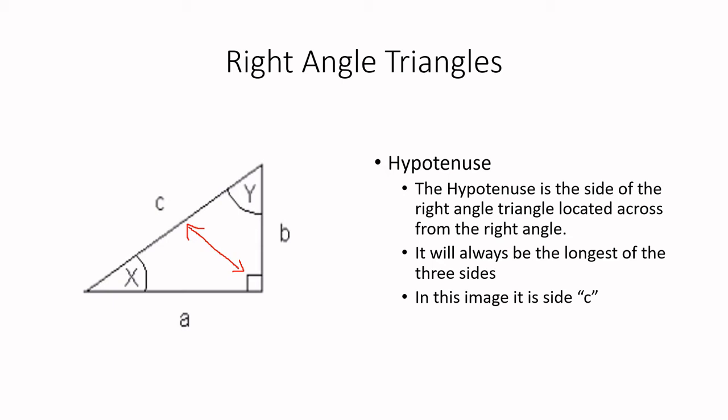Now the important thing about the hypotenuse is it has a very special feature. There's one thing that you can always count on. And that is that it will always be the longest of the three sides. There's no way that the other two sides, a or b could possibly be longer than c.